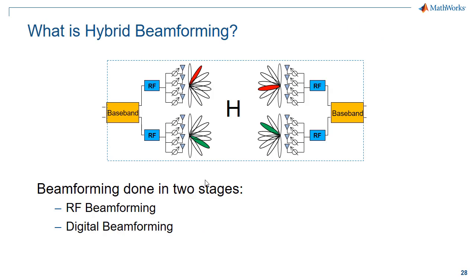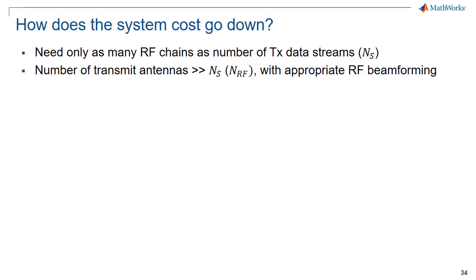So what is hybrid beamforming? Beamforming is done in two stages — the RF beamforming and digital beamforming make up the complete beamforming set. This is about balancing the trade-off between performance, power, and implementation complexity, and that's how the system costs go down.